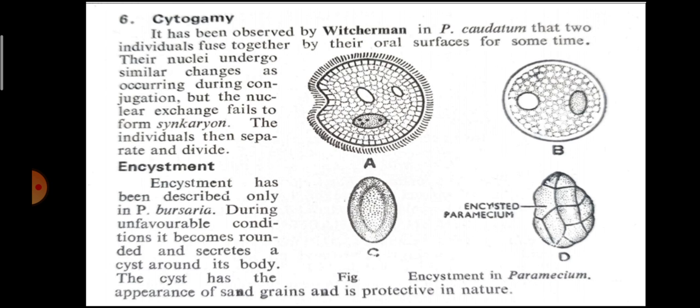Cytogamy: this is another phenomenon observed in Paramecium caudatum, where two individuals fuse together by their oral surfaces for some time. Their nuclei undergo similar changes as occurring during conjugation, but the nuclear exchange fails to form syncarion. The individuals then separate and divide. मतलब conjugation की तरह दो individuals पास-पास आते हैं oral surfaces से, लेकिन इनके अंदर nuclear exchange नहीं होता, syncarion बनने की प्रक्रिया भी नहीं होती, और कुछ समय बाद ये एक दूसरे से अलग हो जाते हैं और divide कर जाते हैं.